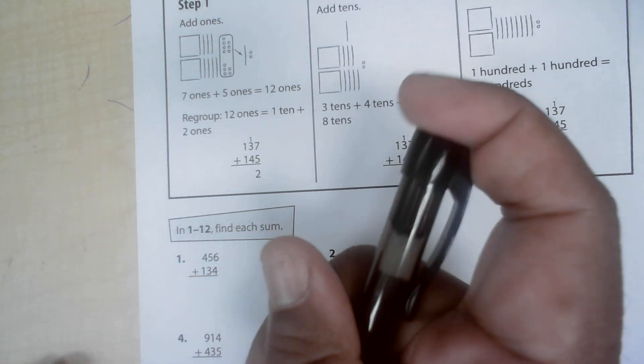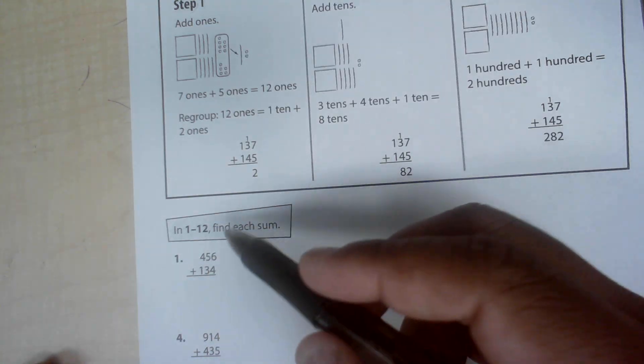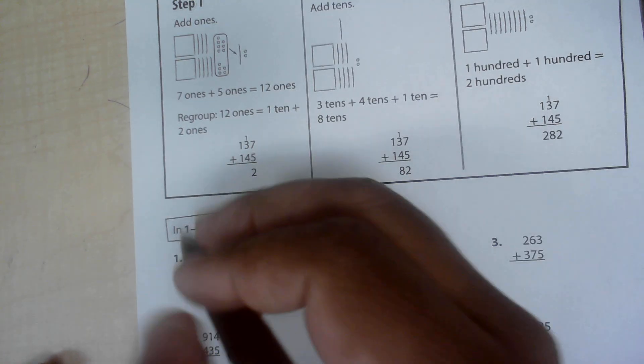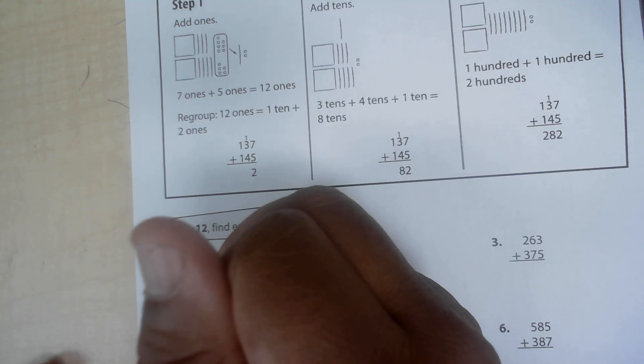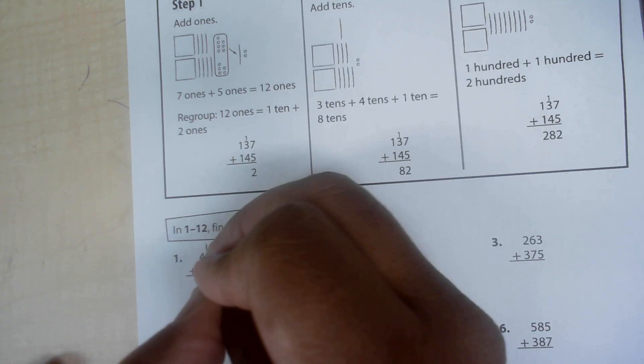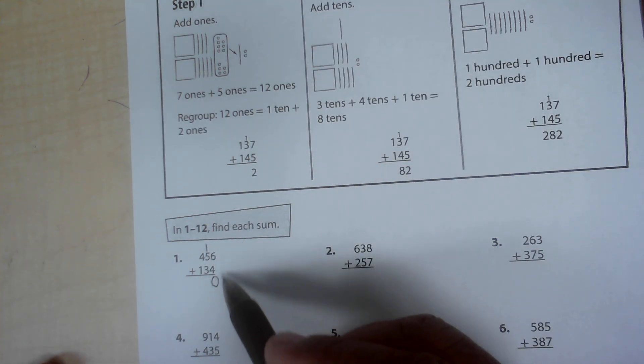First strategy, we'll do the regrouping. You start with the ones, you have six plus four, so that's 10. When you have 10 or more, the zero goes into one's place. And then the one regroups, because you have zero ones and one 10.